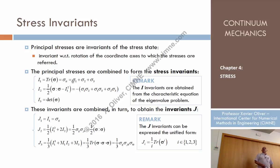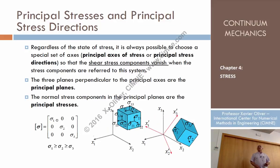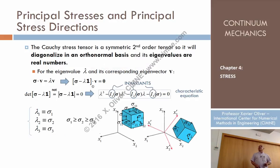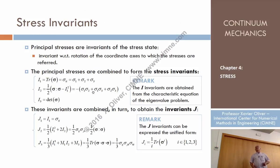How does this result look when we work specifically in the principal directions? Well, σ:σ becomes σ1² + σ2² + σ3², and the trace of σ is σ1 + σ2 + σ3. If I compute that combination, it gives the value of this invariant expressed in terms of the principal stresses.